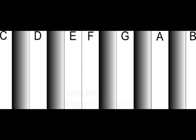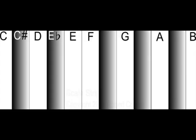The black keys could all be named as sharps or flats, but in practice they are usually labelled C sharp, Eb, F sharp, Ab, and B flat.